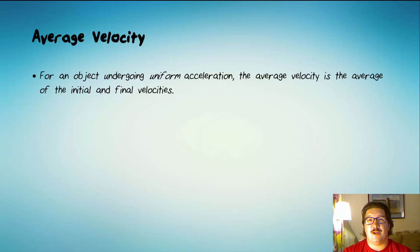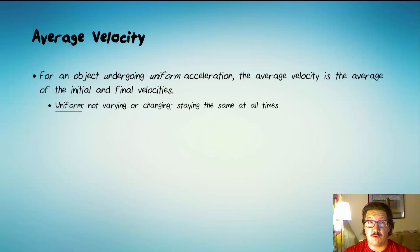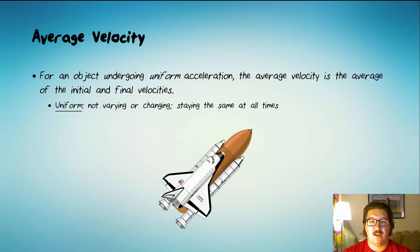For an object undergoing uniform acceleration, the average velocity is the average of the initial and final velocities — literally the average. Uniform means not varying or changing, staying the same at all times. So if something is accelerating at a constant rate, we can calculate the average velocity in this way.